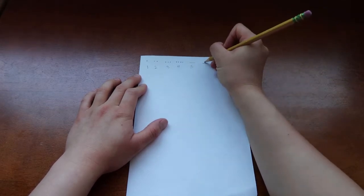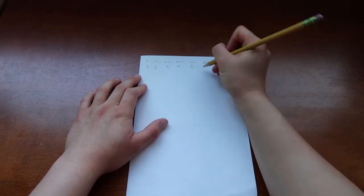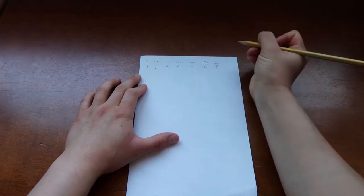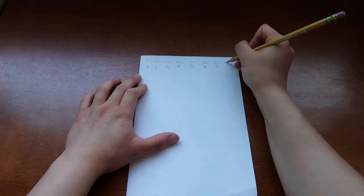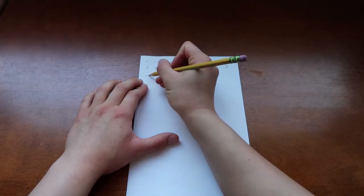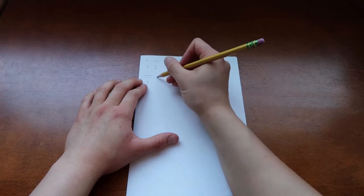Number 6 is the line and a dot. This is the number 7. This is 9. The line is 10.